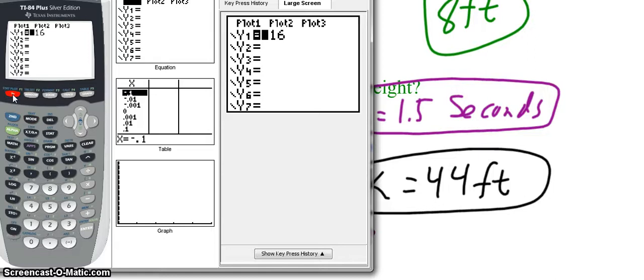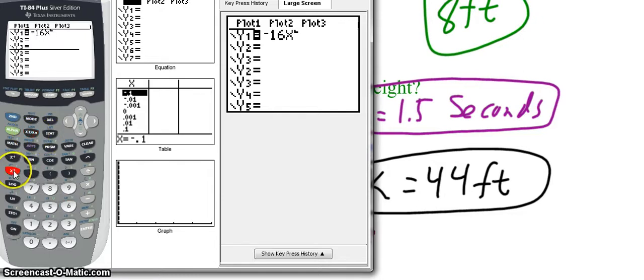We look at the calculator. I go to y1, or y equals. And then in y1, I'm going to type in negative 16. And normally, the equation said t squared. But we're just going to use x because that's what the calculator has. So we're going to say x squared. And then plus 48x plus 8.